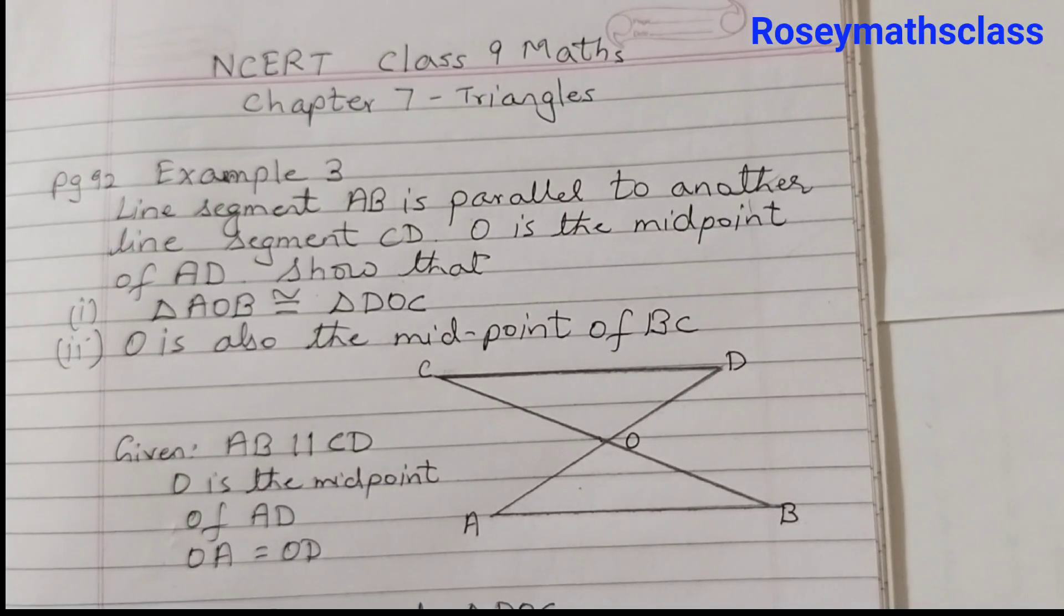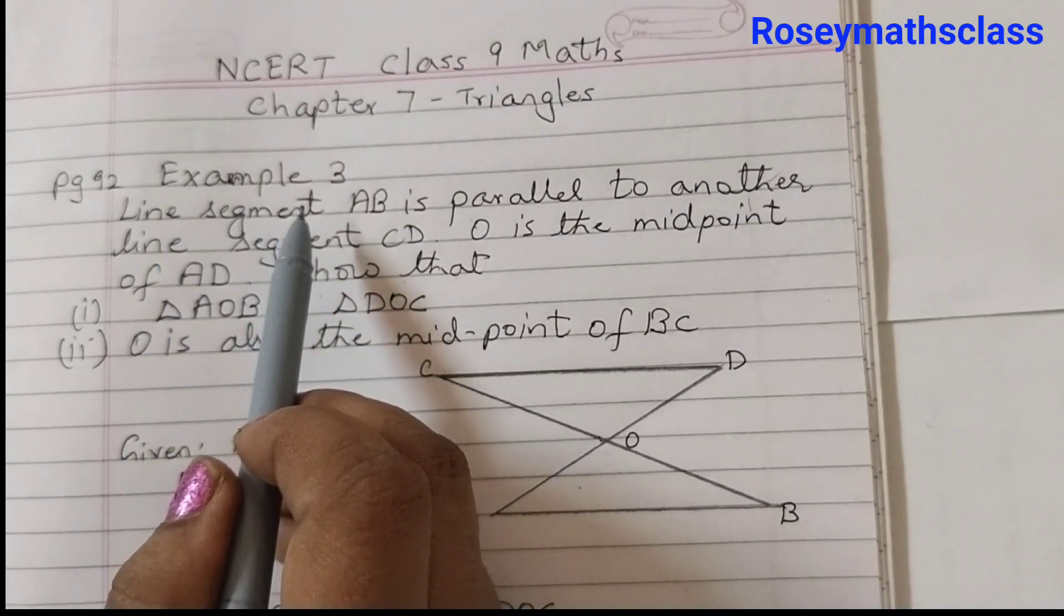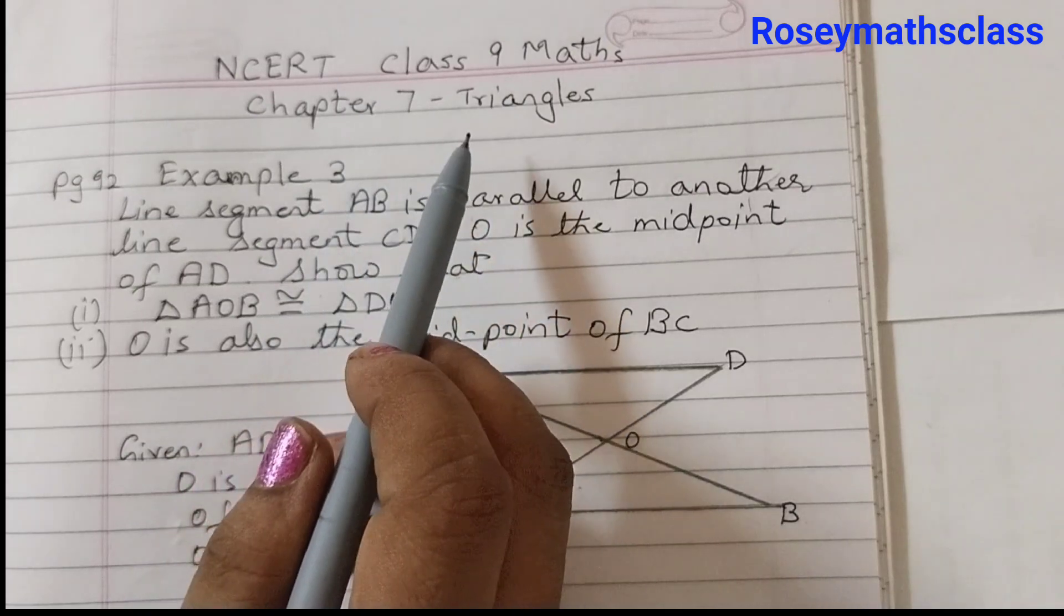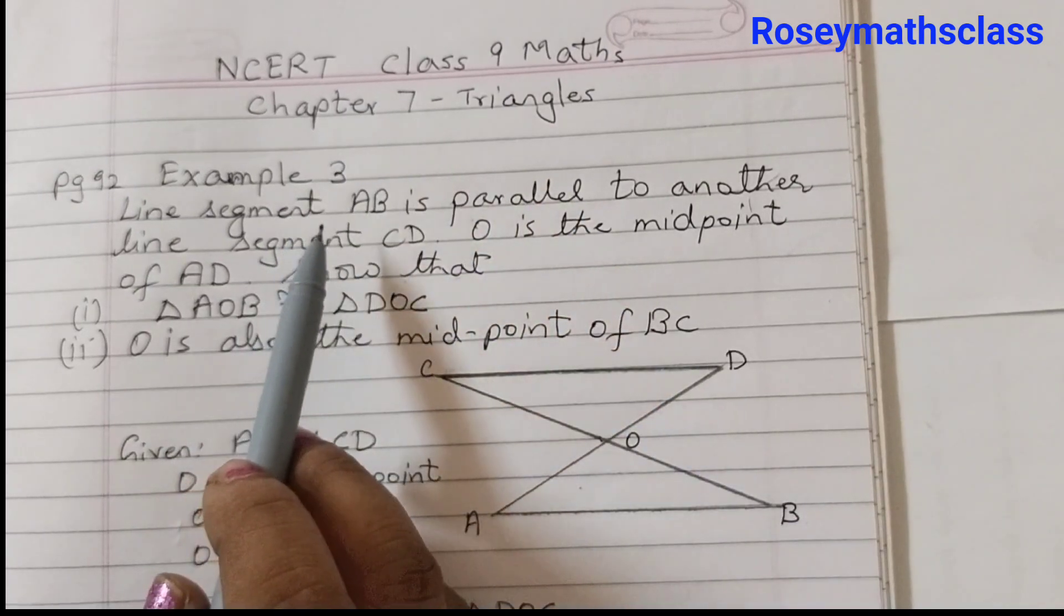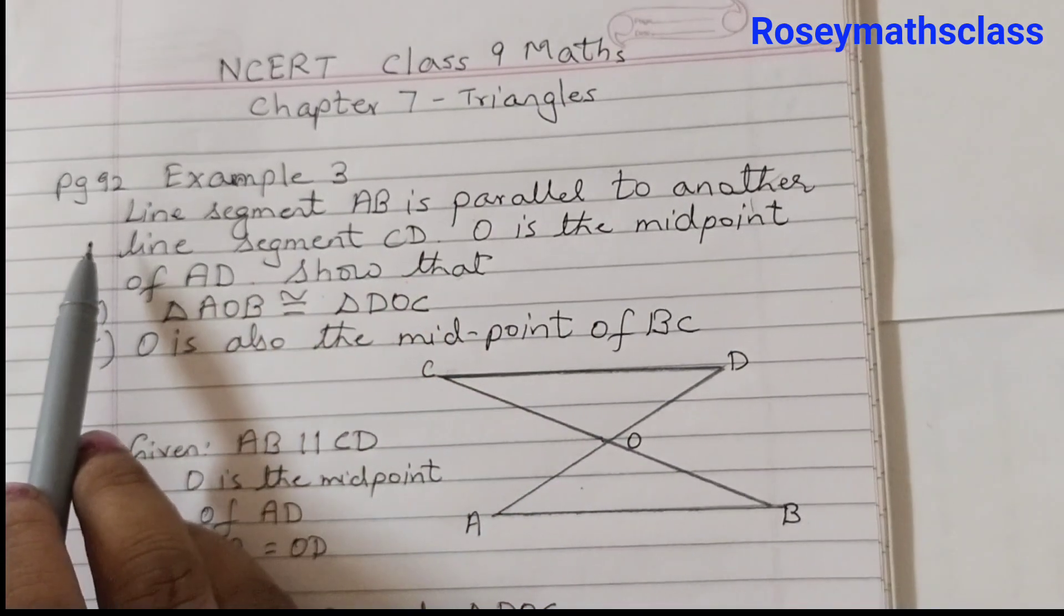Hello students, in today's video we shall discuss example number 3 of chapter 7, triangles. We have already discussed example number 1 and 2, and this is example number 3 which is on page number 92.